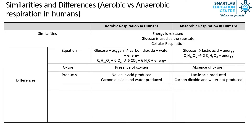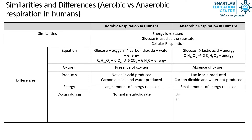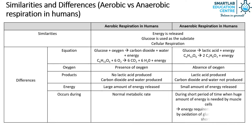In aerobic respiration, a large amount of energy is released, while in anaerobic respiration, a small amount of energy is released. Lastly, aerobic respiration occurs during normal metabolic rate, but anaerobic respiration occurs during a short period of time when a huge amount of energy is needed by muscle cells, and the energy requirement cannot be met by oxidation of glucose due to oxygen shortage.